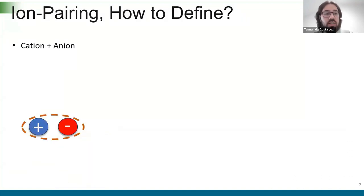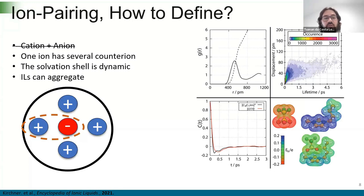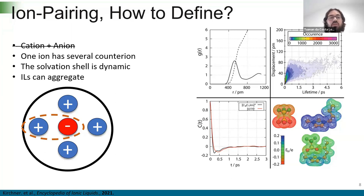How can we define ion pairing? When we say ion pair, the first thing that comes to mind is one cation and one anion — one ion and its counter-ion. But if we think about ionic liquids, things are more complicated because ionic liquids are completely ionic. This means that one ion has many counter-ions in its solvation shell. So if we just look at the interaction between an ion and its closest counter-ion, we may miss some information. We should use the concept of the ion cage.